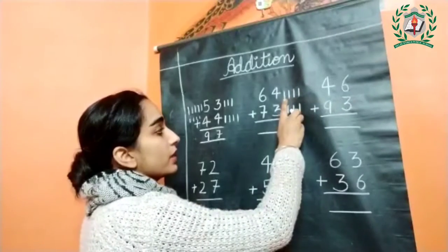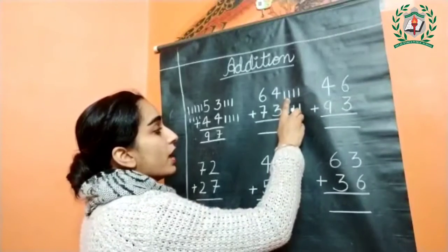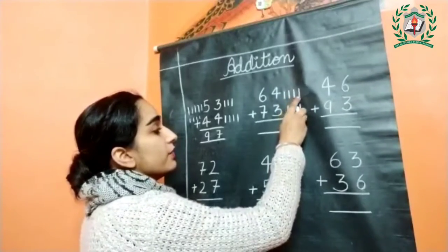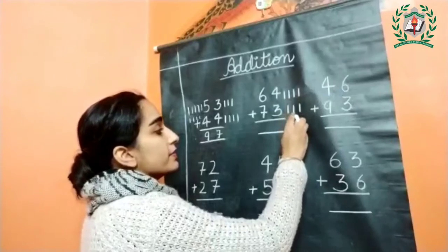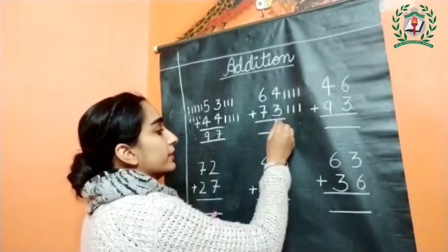Next, same — calculate this side first: one, two, three, and four. Next: one, two, and three. Now add them together: one, two, three, four, five, six, and seven.